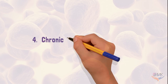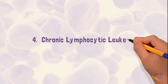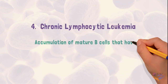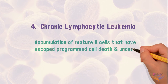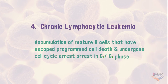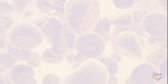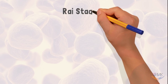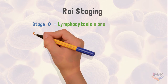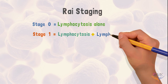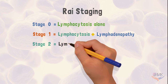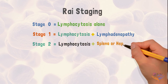Moving on to the last type of leukemia, chronic lymphocytic leukemia. It is defined as leukemia in which there is accumulation of mature B cells that have escaped programmed cell death and undergone cell cycle arrest in the G0-G1 phase. This type of leukemia is classified into different stages known as Rai staging. Stage 0 is characterized by lymphocytosis alone. Stage 1 consists of lymphocytosis along with lymphadenopathy. In stage 2, the patient has lymphocytosis in combination with splenomegaly and hepatomegaly.